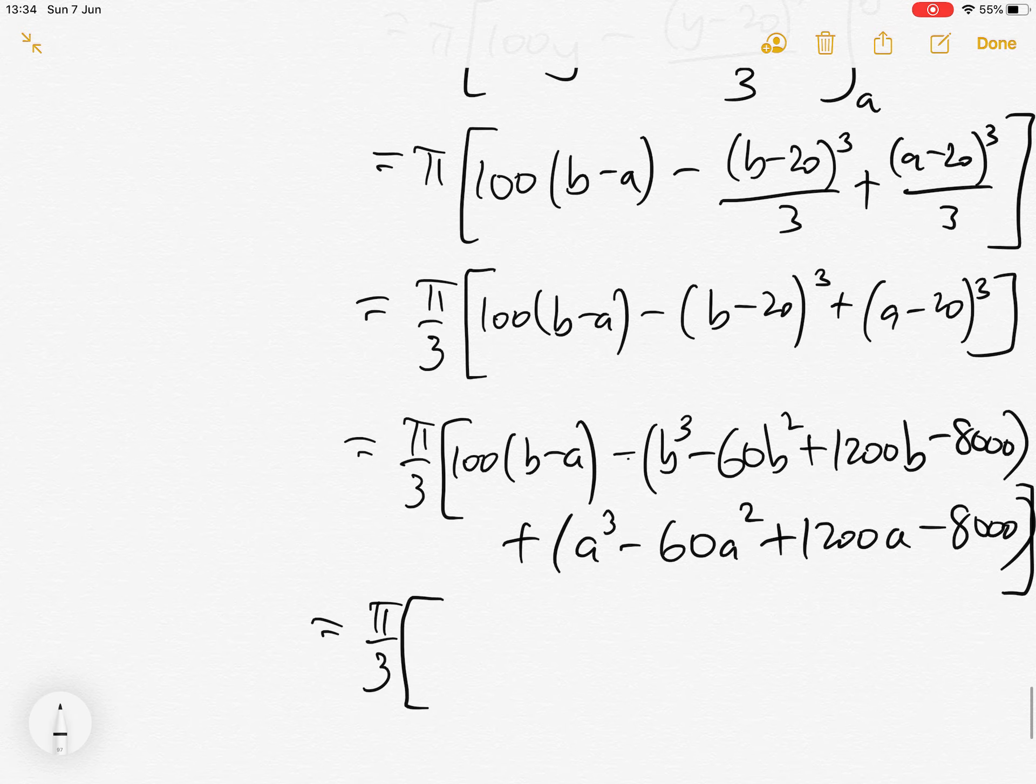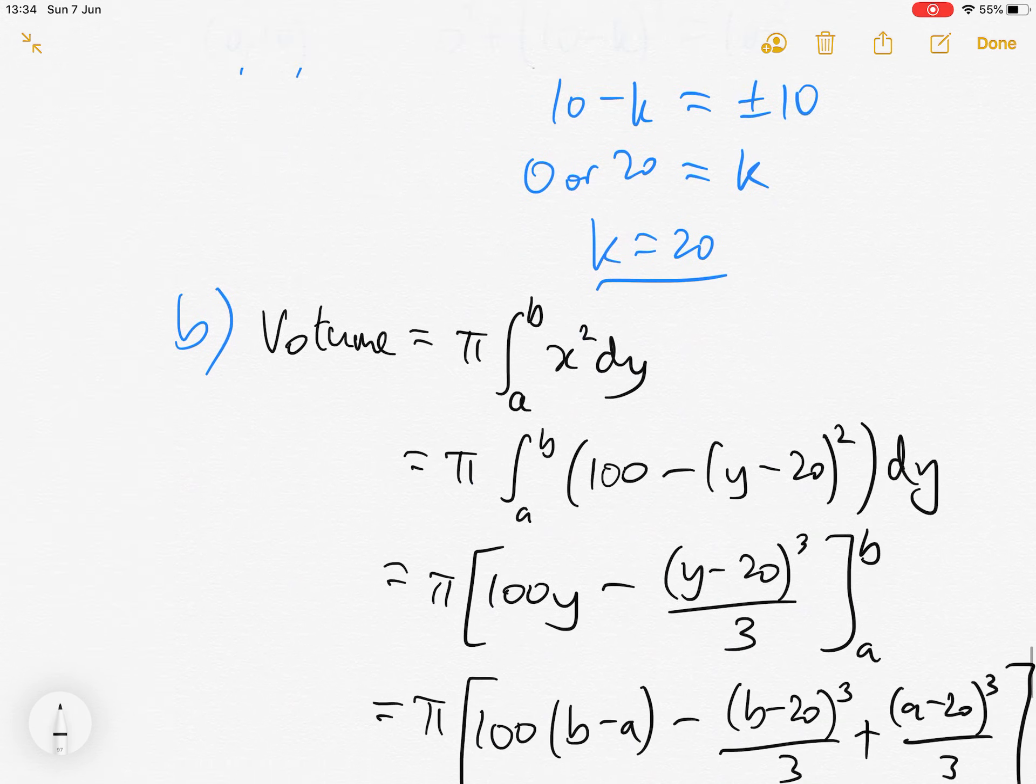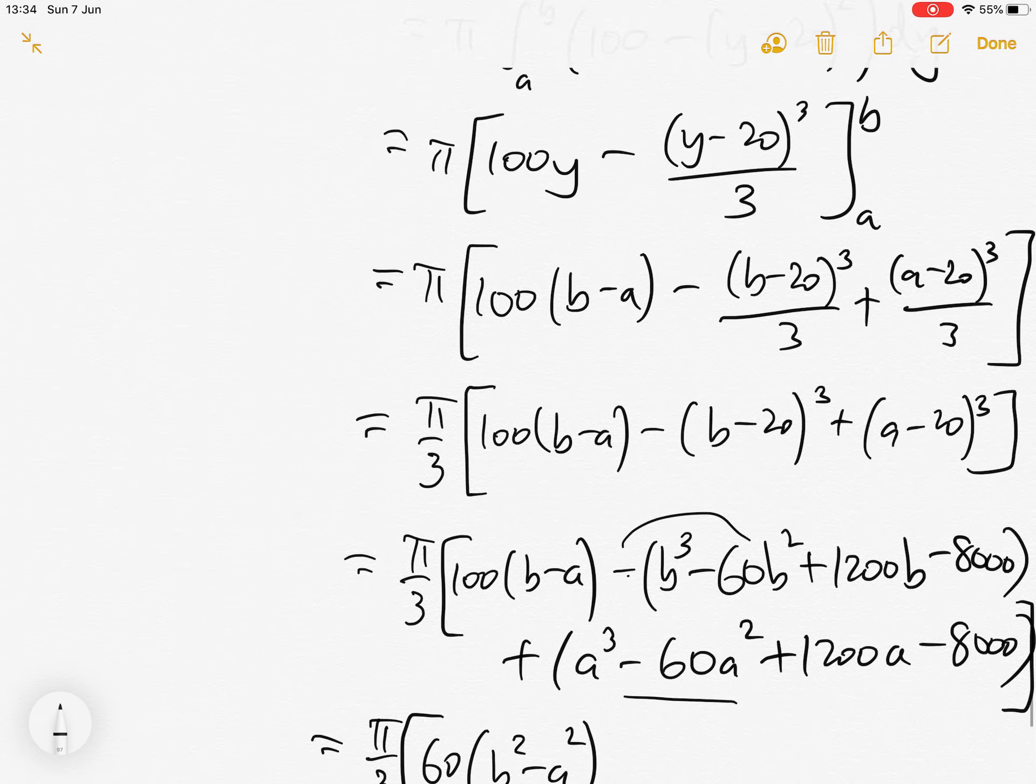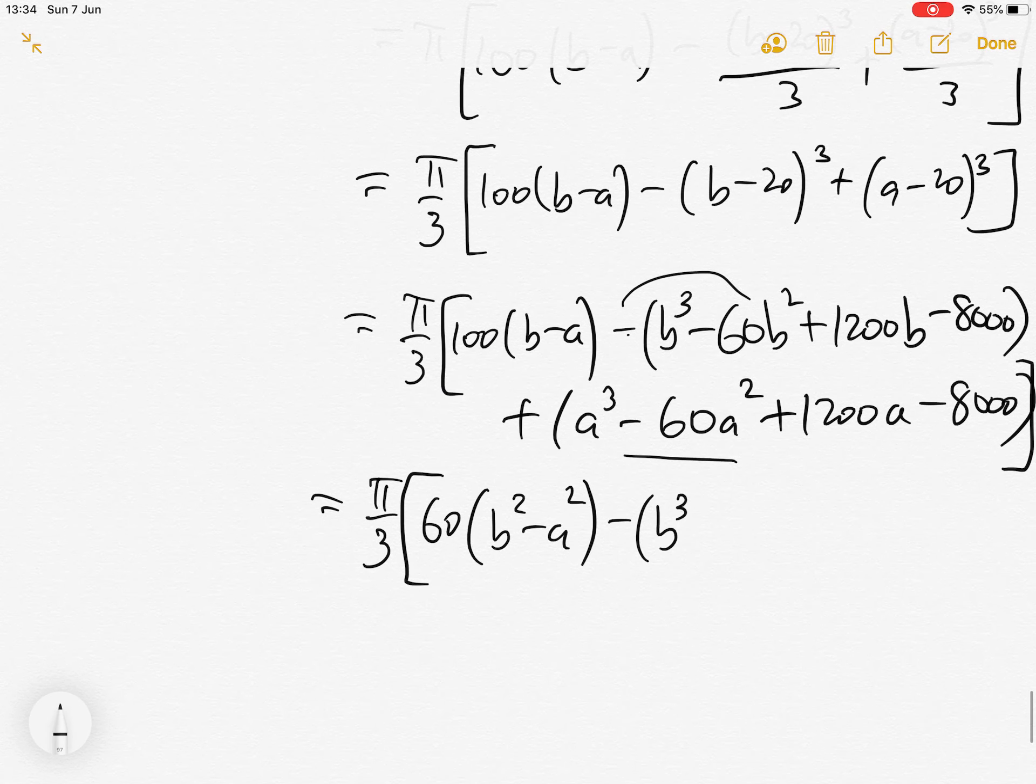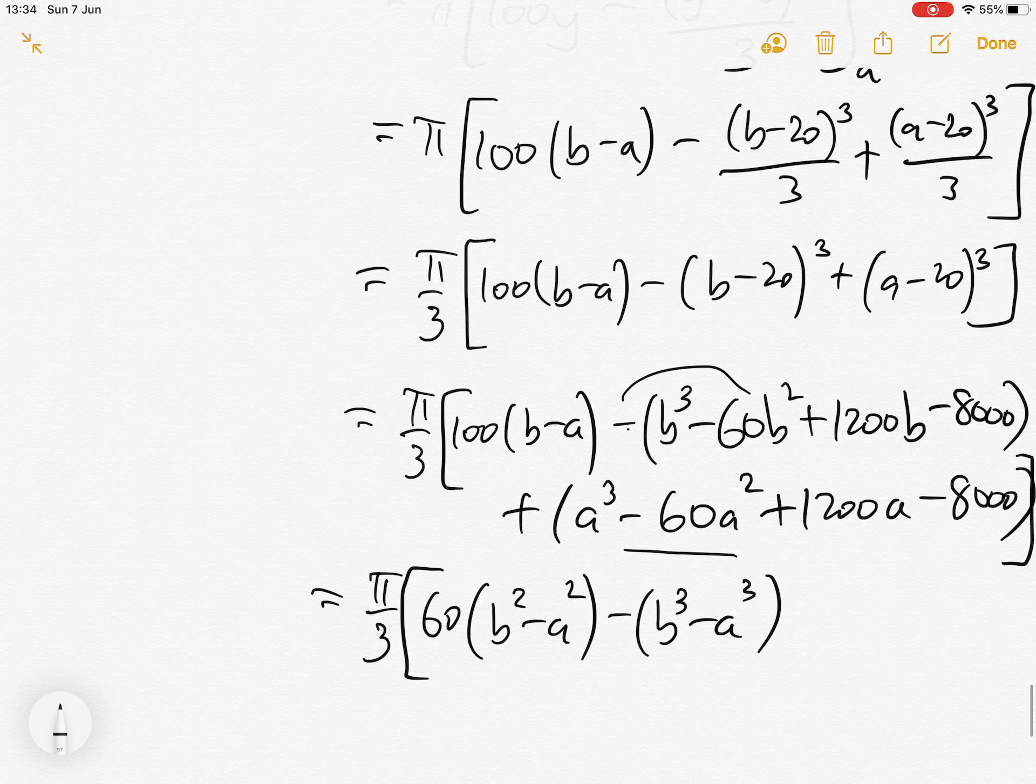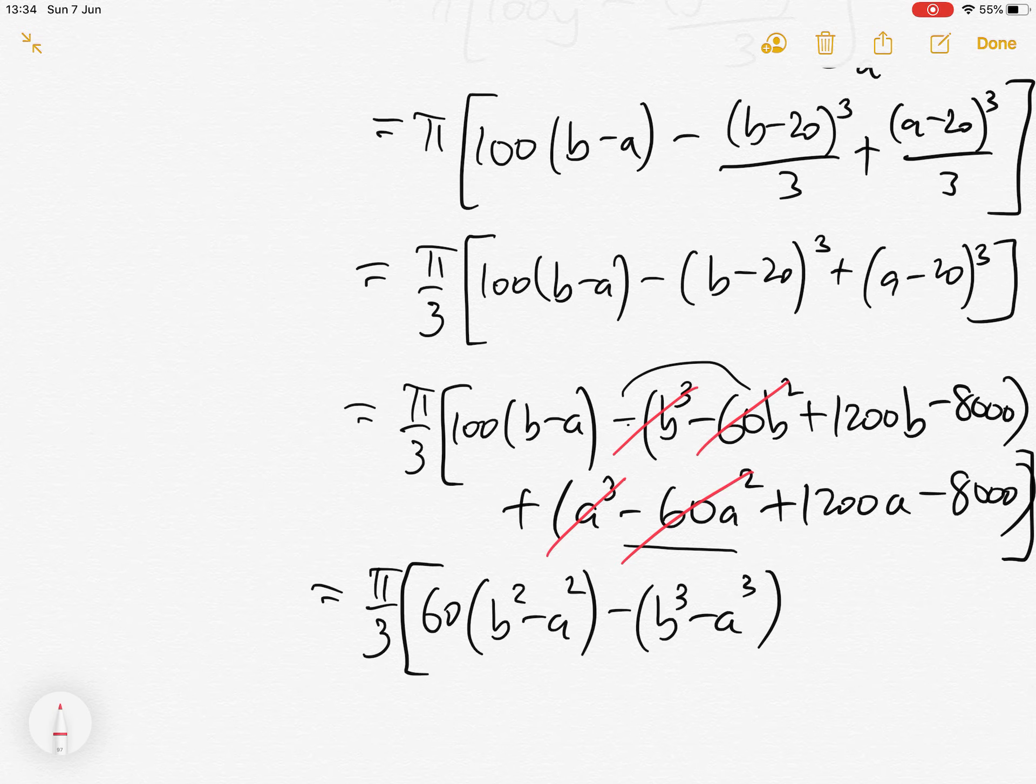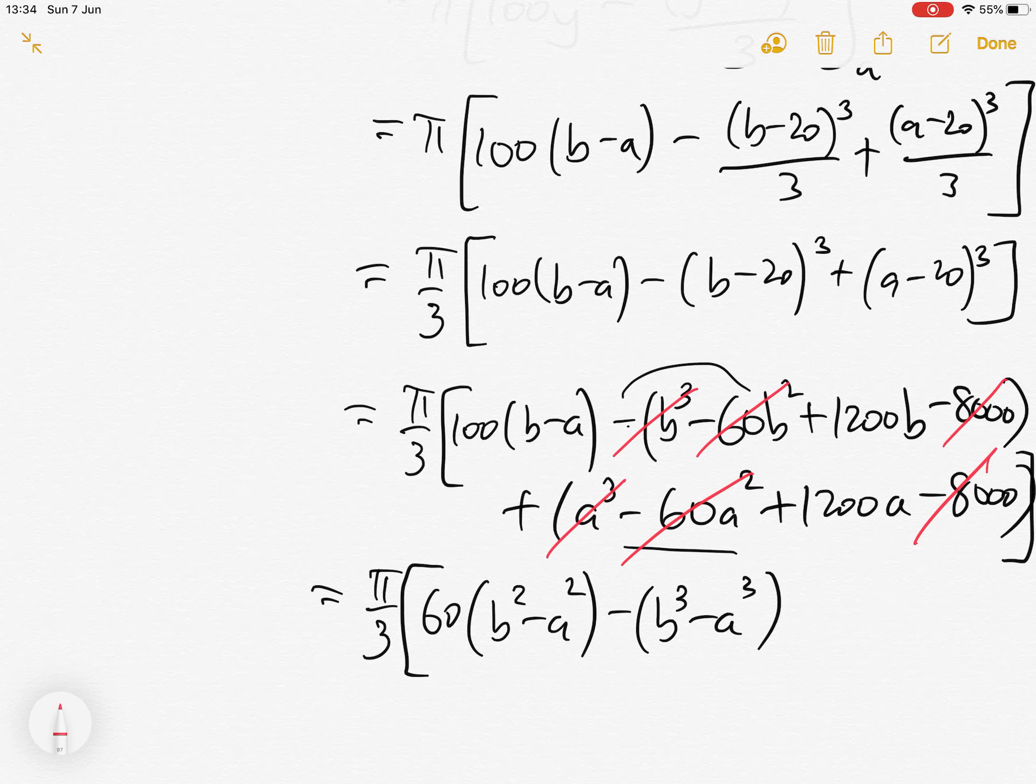So we've got pi over 3, and we want to get 60 b squared minus a squared, which we've got. Then we want minus b cubed minus a cubed, we've got that. Then we've got 1200 a minus 100 a, that's 1100, but we wanted 900.